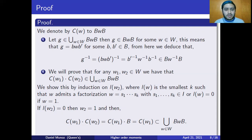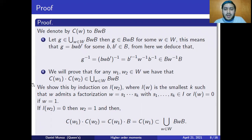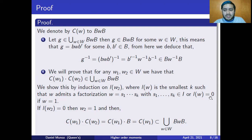Now I want to prove that the union is also closed under multiplication. I need to prove that for any two elements W1 and W2 in the Weyl group, the product C(W1) times C(W2) is in the union of the double cosets. I'm going to prove this by induction on L(W2), where L(W) denotes the smallest k such that W admits a factorization as a product of k generators S1 through Sk from the set of generators. L(W) is zero when W is the identity. Sometimes this L function is called the length function of the Weyl group.